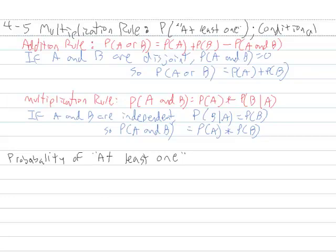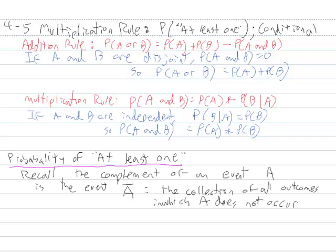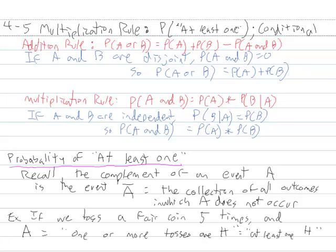For the first part of this video, we are going to look at the probability of at least one of something. Recall the definition of the complement of an event A as A-bar, which is the collection of all outcomes in which A does not occur. So let's look at an example. If we toss a fair coin five times and A is the event that one or more tosses are heads — which is the same as saying at least one of the tosses is heads — one or more and at least one mean the same thing.